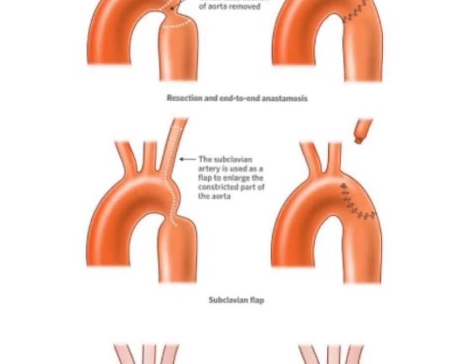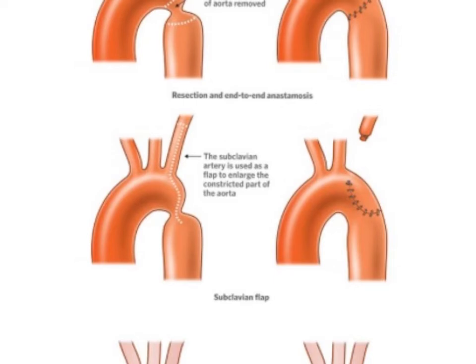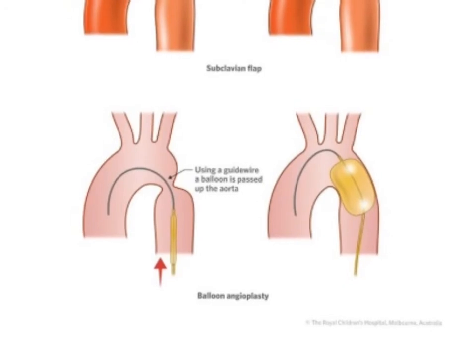This repair is used when the coarctation is a little bit lower and there's not enough tissue to sew together. What they end up doing is tying off the subclavian artery — other vessels pick up that blood flow and become bigger to handle flow down the arm. They open that vessel up and produce a patch which opens up the aorta. You don't have a subclavian but you have an aorta. The last one is the newest procedure: passing a guide wire through the aorta and using a balloon to open it up.